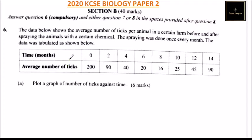Question six states: the data below shows the average number of ticks per animal on a certain farm before and after spraying the animal with a certain chemical. Spraying was done once every month. At zero months (before spraying) the average was 200. At two months it dropped to 90, at four months to 40, at six months to 20, and at eight months to 16. At ten months the number increased to 25.